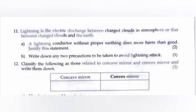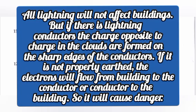Question 11. Lightning is the electric discharge between charged clouds in atmosphere or between charged cloud and the earth. A. A lightning conductor without proper earthing does more harm than good. Justify this statement. Answer: All lightning will not affect buildings, but if there is lightning conductors, the charge opposite to charge in the clouds are formed on the sharp edges of the conductors. If it is not properly earthed, the electrons will flow from buildings to the conductor or conductors to the building. So it will cause danger.